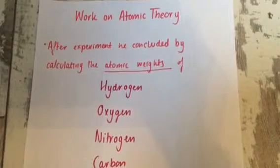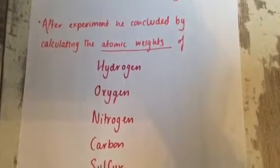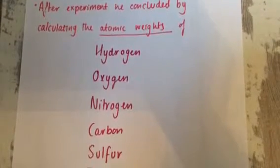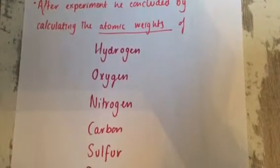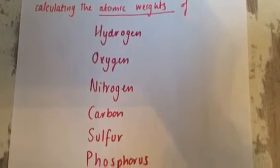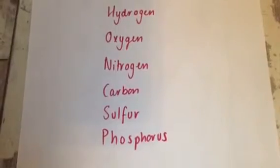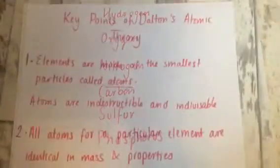After Dalton's experiments, including those into the constitution of mixed gases, he concluded by calculating the atomic weights of hydrogen, oxygen, nitrogen, carbon, sulphur, and phosphorus. He calculated these weights from the percentage composition of compounds, using an arbitrary system to determine what he thought to be the probable atomic structure of each of these compounds.